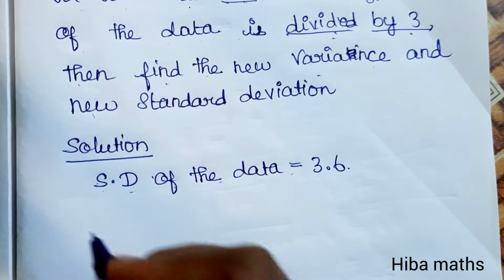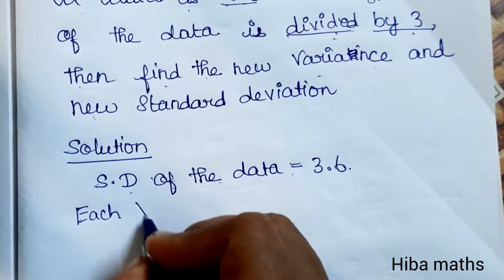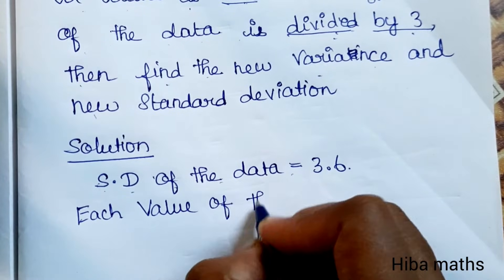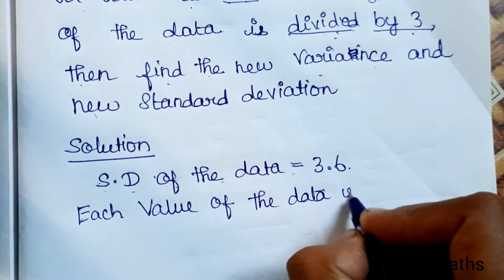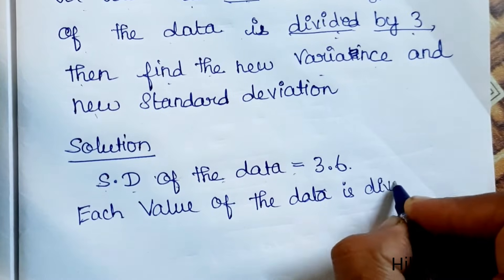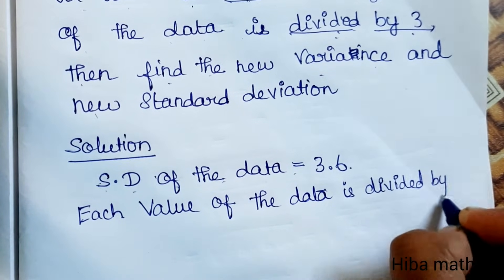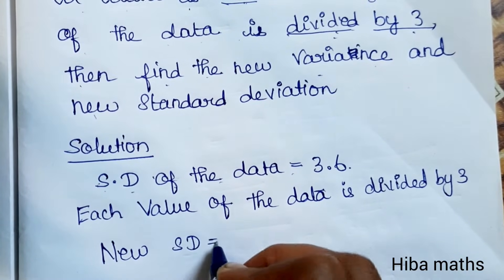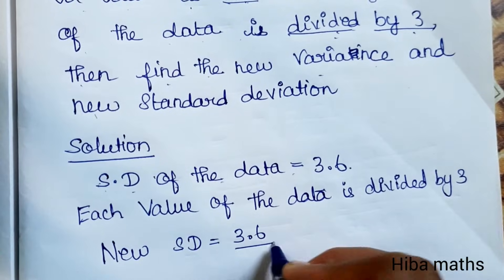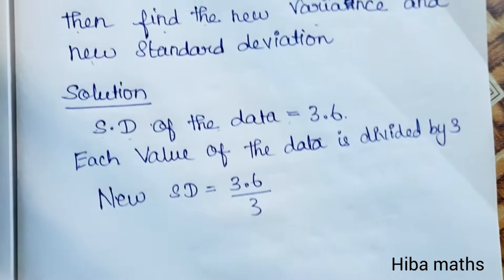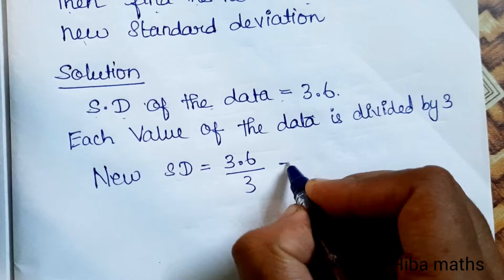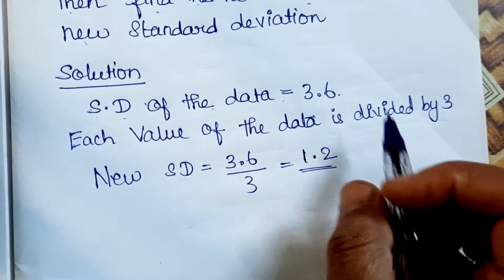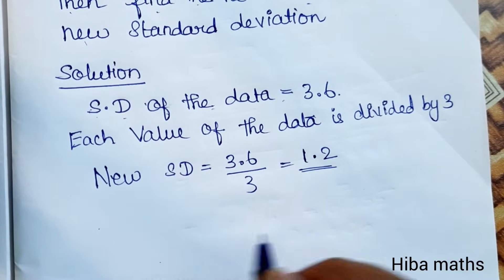Each value of the data is divided by 3, so the new standard deviation equals 3.6 divided by 3. The 3s cancel, giving us 1.2. So the new standard deviation is 1.2.